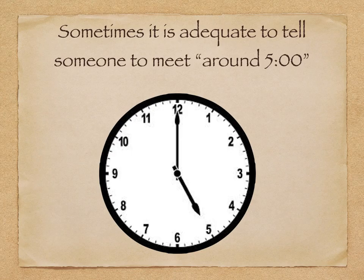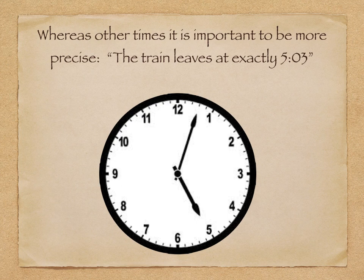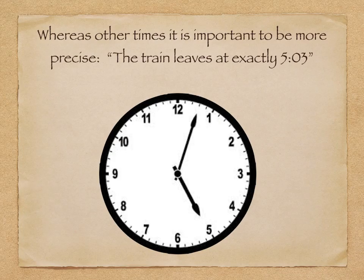For instance, sometimes it's good enough to tell someone to meet around five o'clock, and that could mean 4:50, 5:05, 5:15 — but you're around five o'clock, and that's fine for the situation. However, other times, like if you need to catch a train, you need to know it's exactly going to leave at 5:03. And if you don't pay attention to that precise time, you can miss your train. So sometimes a general sense of time is fine enough, and other times we need to be careful, accurate, and precise.